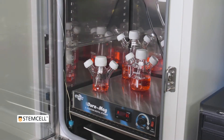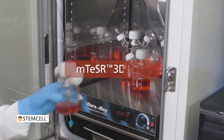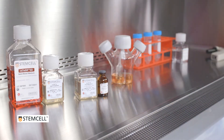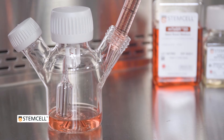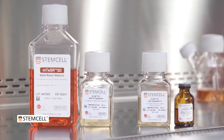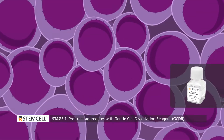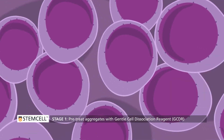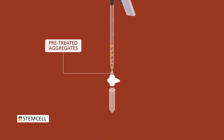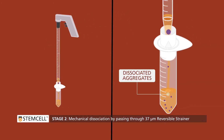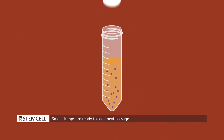In the M-Teaser 3D system, a clump passaging method is recommended to ensure consistent growth rates and minimize the risk of karyotype abnormalities that can be associated with single-cell passaging methods. The M-Teaser 3D clump passaging method consists of pre-treating the HPSC aggregates with a non-enzymatic reagent, gentle cell dissociation reagent, and then mechanical dissociation by passing the aggregates through a 37-micron reversible strainer to generate small clumps of ideal size to seed the next passage.